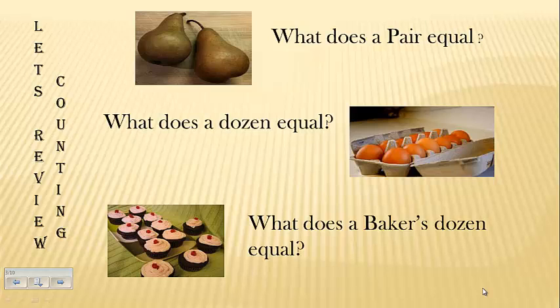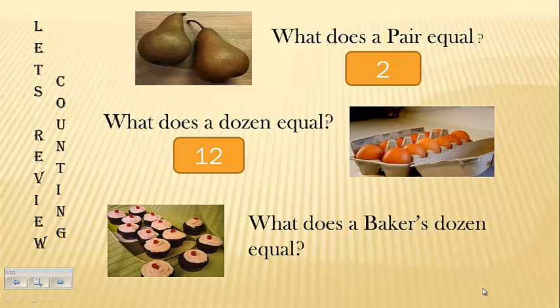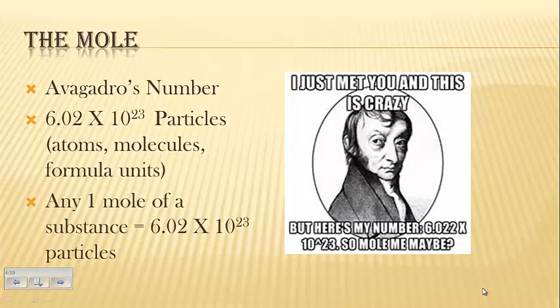So before we even get started, let's just review some counting units, hopefully, that you are familiar with. The pair. When I say pair, what number comes to your mind? Not the fruit. I'm actually talking about a pair and a number. Pair, two. Dozen. When I say dozen, hopefully you think of the number 12. How about this one? A baker's dozen. Now this may be more difficult for some of you if you don't know this term, but a baker's dozen, you should have 13. That brings us to the mole, the counting unit. One mole, so when I say one mole, what should come to your mind is 6.02 times 10 to the 23rd particles.